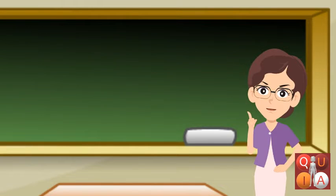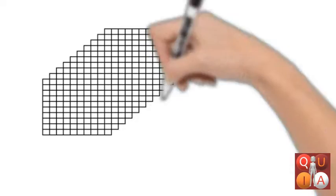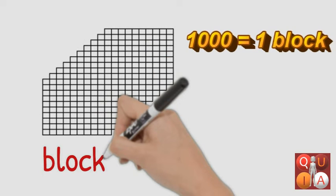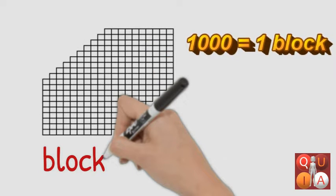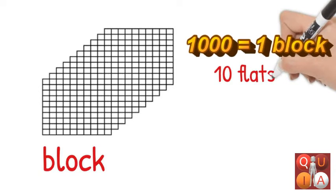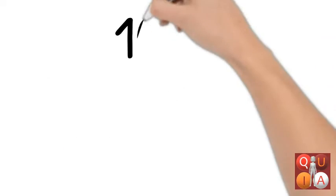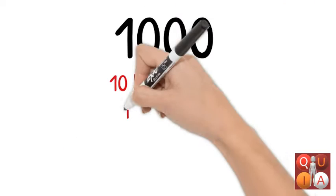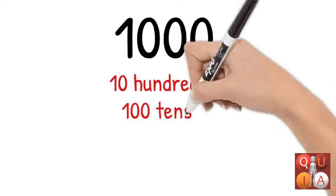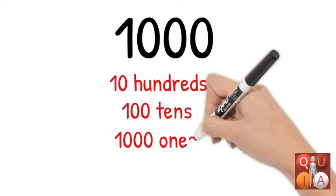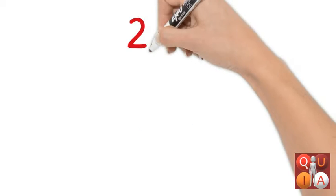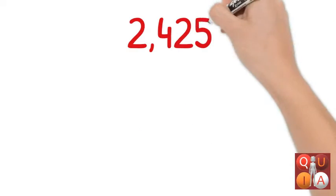Now we will illustrate 4-digit numbers. This figure represents a block. 1,000 is equal to 1 block. 1,000 is also equal to 10 flats, 100 longs, and 1,000 squares. 1,000 is also equal to 10 hundreds, 100 tens, and 1,000 ones. Let us illustrate 2,425.